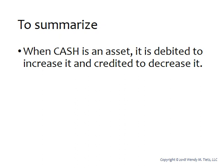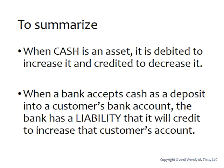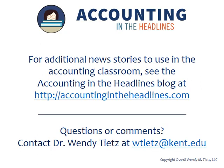To summarize: when cash is an asset, it is debited to increase it and credited to decrease it. When a bank accepts cash as a deposit into a customer's bank account, the bank has a liability that it will credit to increase that customer's account. That is the reason why the bank's debits and credits seem to be backwards from what is on your bank statement. Thanks for watching.